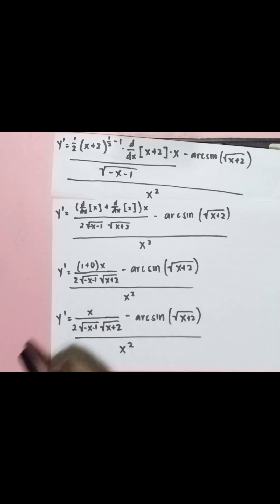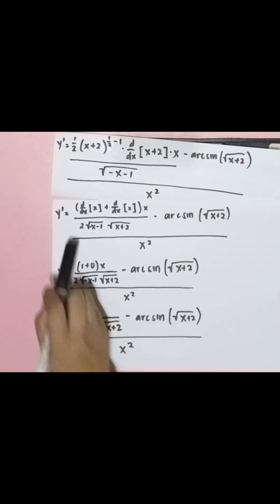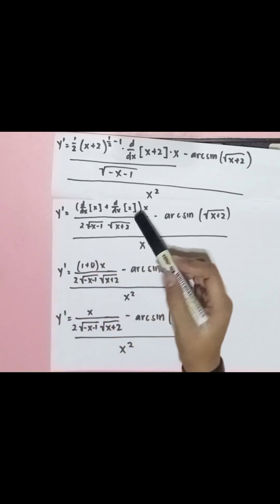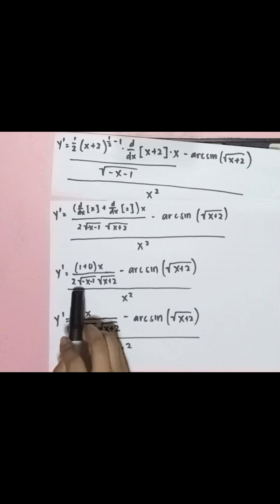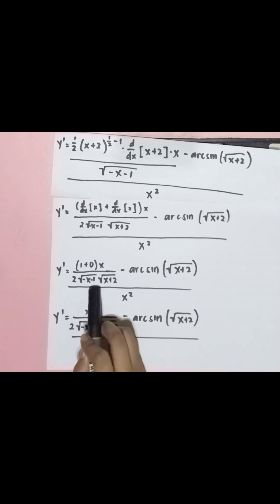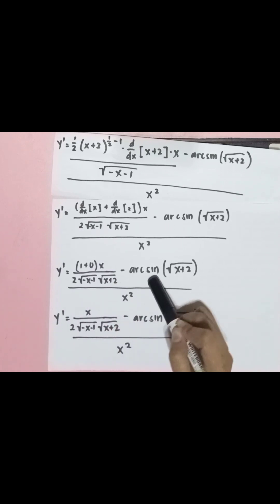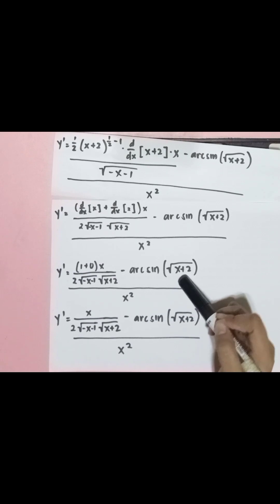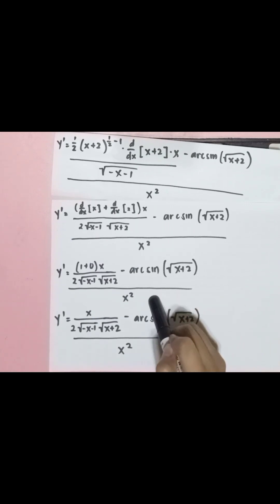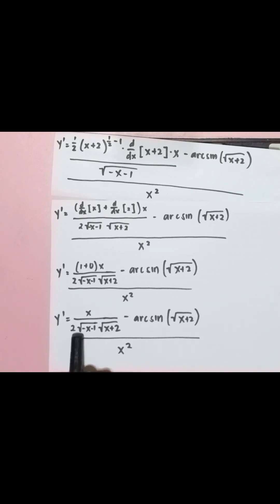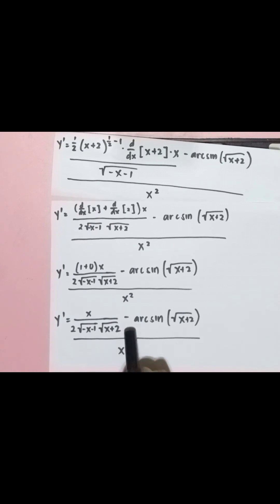Simplifying: the derivative of x is 1 and the derivative of the constant 2 is 0. So y prime equals x over 2 times the square root of (x plus 2), minus arcsin multiplied by (x plus 2), all over x squared. This is our final answer.